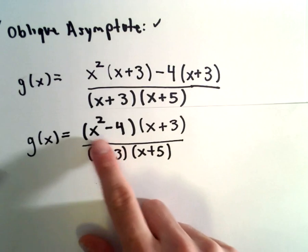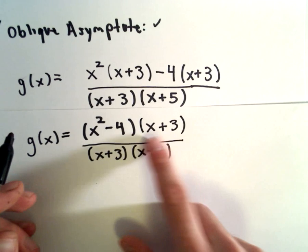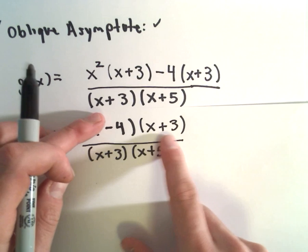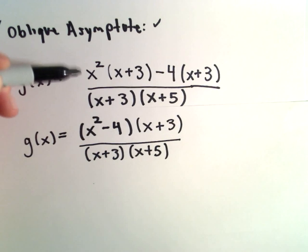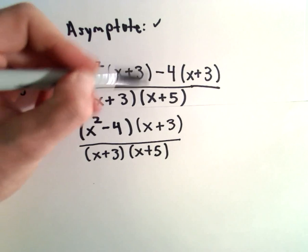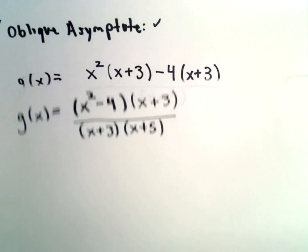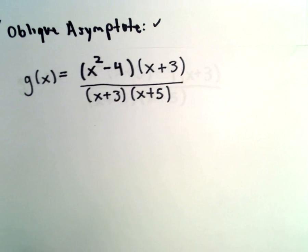This factoring makes sense if you think about distributing. You distribute x squared to both terms, x and 3, and then we distribute negative 4 to both terms, x and positive 3. Take x squared, distribute it to x plus 3, then take negative 4 and distribute it to x plus 3.